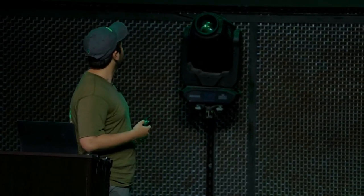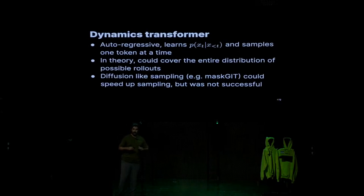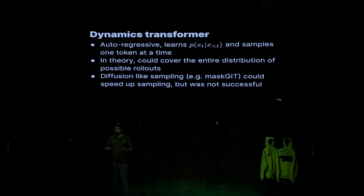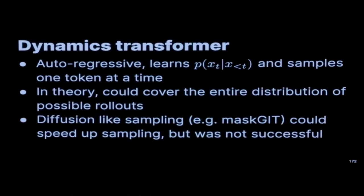Doing this is really powerful because you could cover the whole distribution of your training set — the whole distribution of possible rollouts given a context, given a few frames. The model could imagine any type of future, which is really desirable because you don't want to restrict what happened next. You want it to be as general as possible. We tried a few things to speed up this autoregressive sampling since it's a little slow — diffusion-like sampling, some fancy techniques — but we didn't really succeed yet. We'll keep trying.